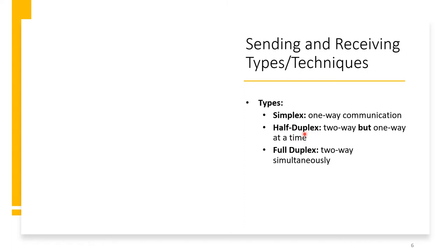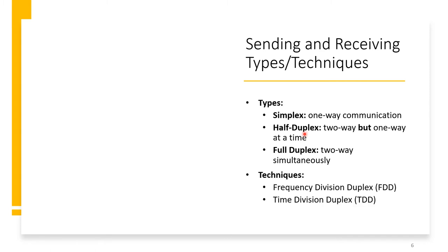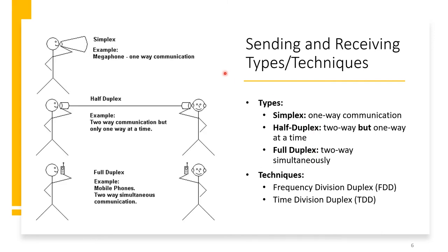In mobile communication we have different duplexing types. Simplex is one-way communication. Half-duplex is two-way communication but one at a time, like a walkie-talkie. Full duplex is two-way simultaneous communication, like mobile phones. This is important because full duplex requires almost double the resources — one channel supports one-way communication, while two channels enable full duplex.